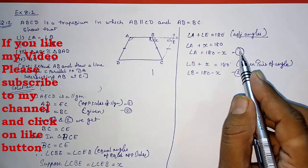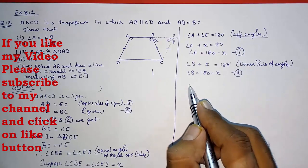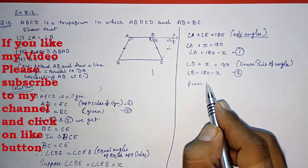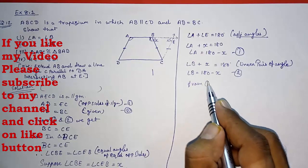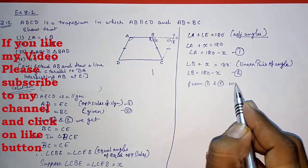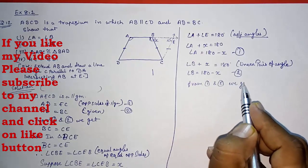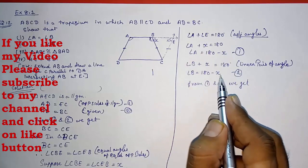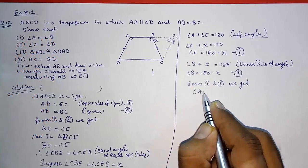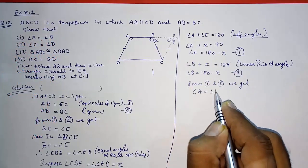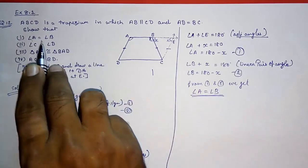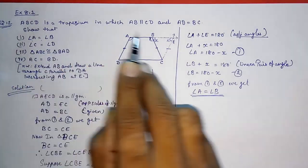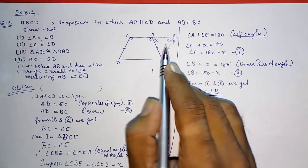From Results 1 and 2, angle A equals 180 minus X and angle B also equals 180 minus X. Therefore angle A is equal to angle B. This is our Answer 1.